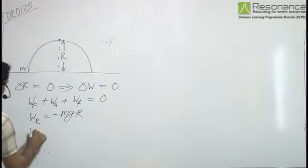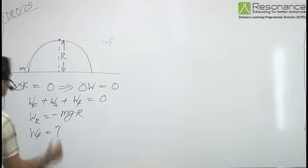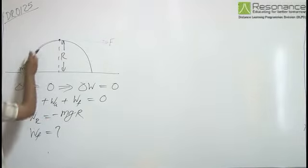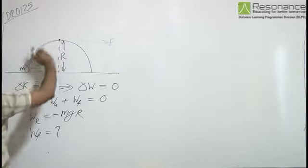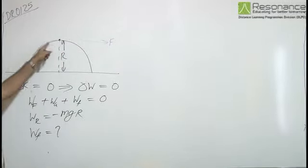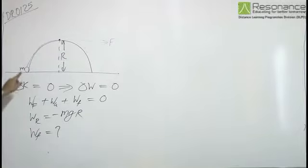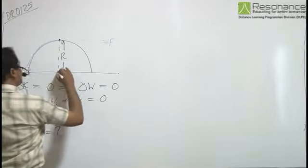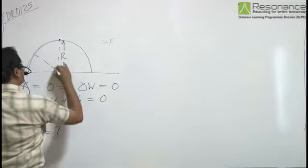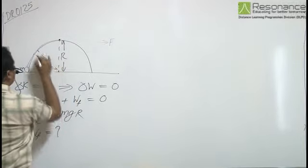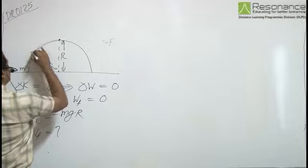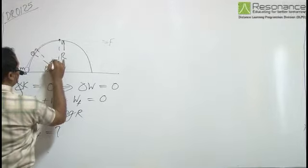But now we need to find work done by friction. As the body is pulled up along the rough curved surface, the normal reaction is continuously changing and so is the frictional force. Let us assume the body to be at an angular position of theta and moved by an angle d theta.